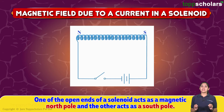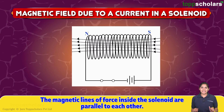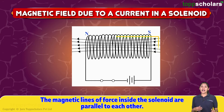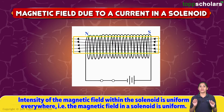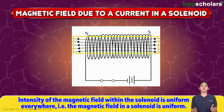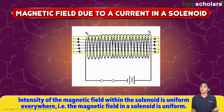One of the open ends of the solenoid acts as a magnetic north pole and the other acts as a south pole. The magnetic lines of force inside the solenoid are parallel to each other, and the intensity of the magnetic field within the solenoid is uniform everywhere. Now, what if the magnetic field lines are not parallel to each other? Then, at the intersection point, there will be two directions of the same field, which is just not possible.